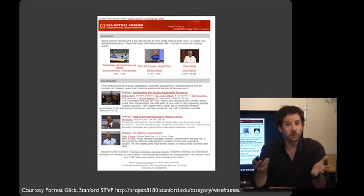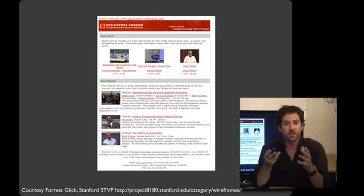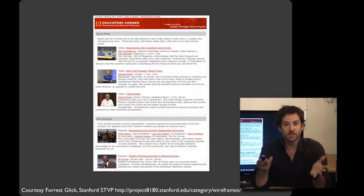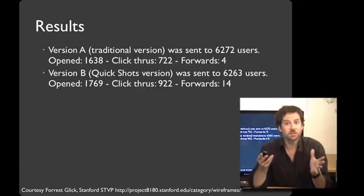Here's another example, this one from Forrest Acrylic at the Stanford Technology Ventures Program. They have a regular email list where they send out links to videos about entrepreneurship. Forrest was interested in increasing the number of people who clicked through the email to see the content on offer. This is the original version of their email, and here's a revised version. The change is pretty subtle — the goal is to provide more real estate and emphasis to the quick shots at the top of the email. This email was sent to a little more than 12,000 people, about half to each.